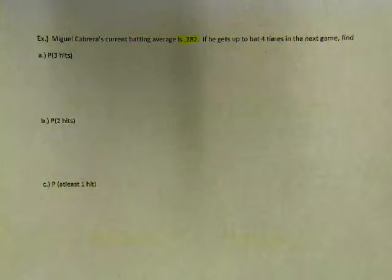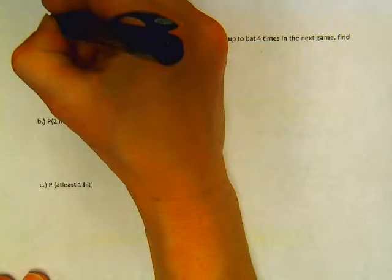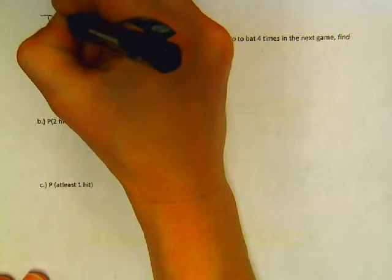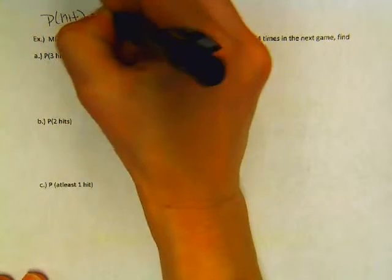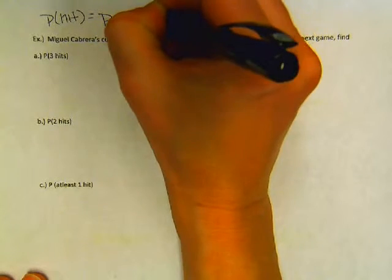So we're gonna count that as, we're gonna let getting a hit be P, and it's gonna be .282. So Q is not a hit, right?